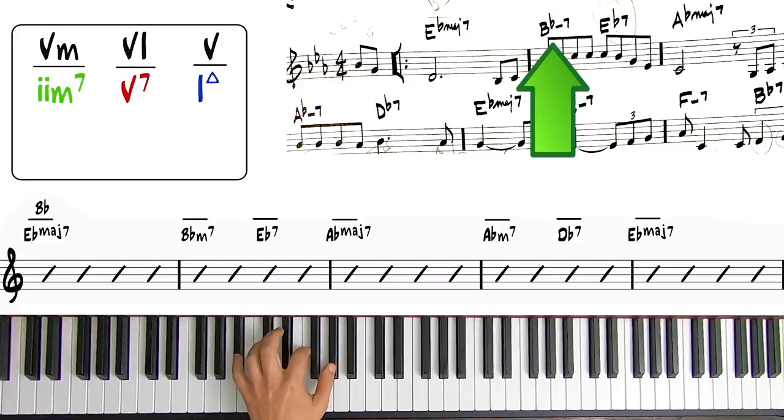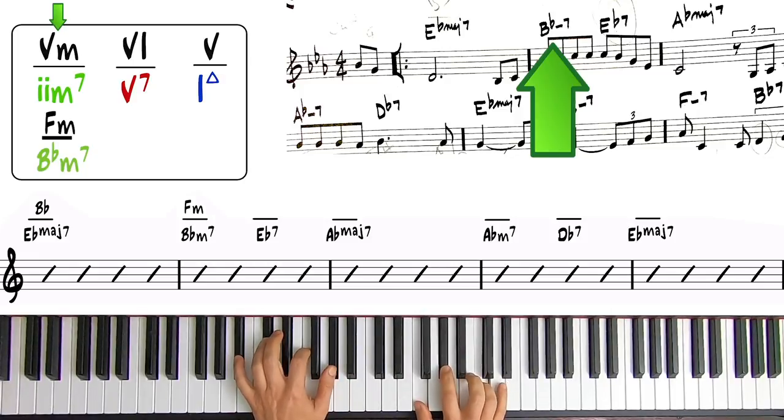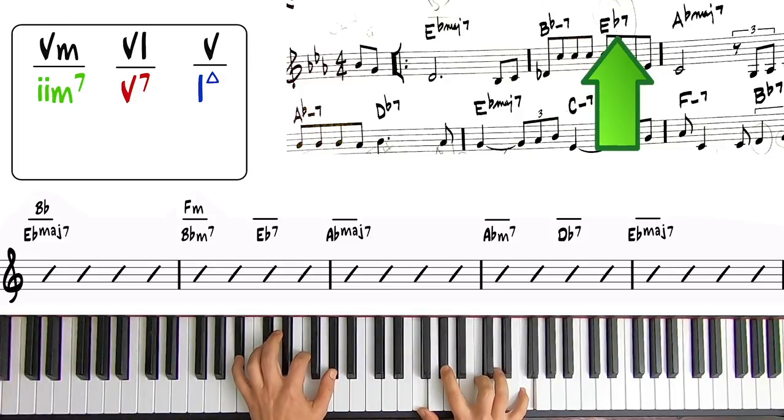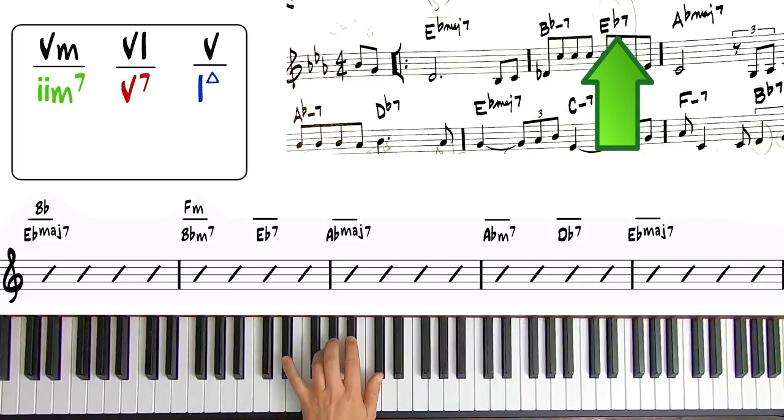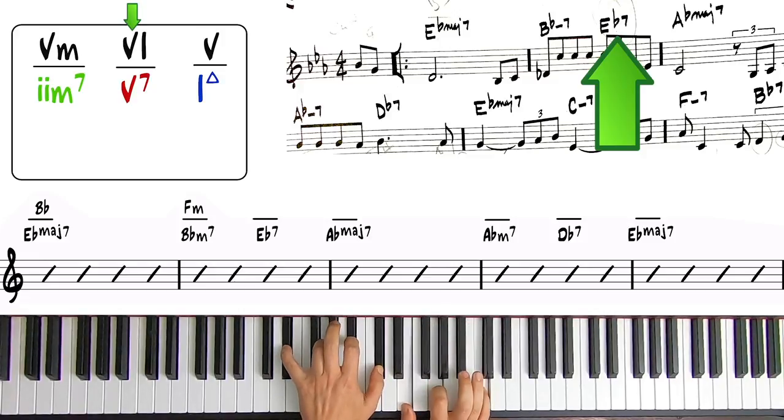On the downbeat of measure two we have a minor seven chord—that's when we're using our five minor. In this case, we have F minor over B-flat minor seven. On the third beat of the same measure, we see our first instance of a dominant seven chord, E-flat seven. This is when we use the six major from our random grab bag experiment. We have six major—that gives us C, so C over E-flat seven.